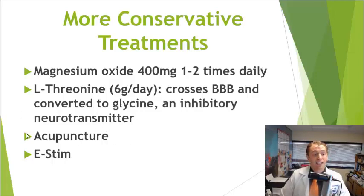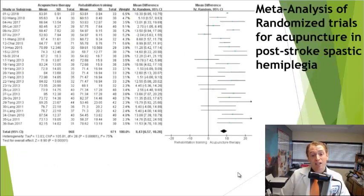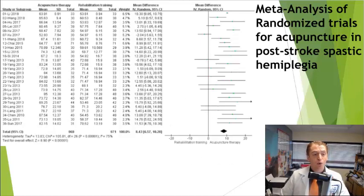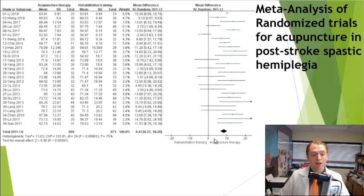Acupuncture also has evidence in spasticity, along with electrical stimulation of the nerves and muscles using TENS units. This is a meta-analysis of acupuncture studies on post-stroke spastic hemiplegia, shown in a forest plot. The line in the middle is zero — no benefit. To the right means greater benefit; to the left favors placebo. Some studies showed benefit and some did not, but on average there was a benefit, so acupuncture does seem to be helpful.